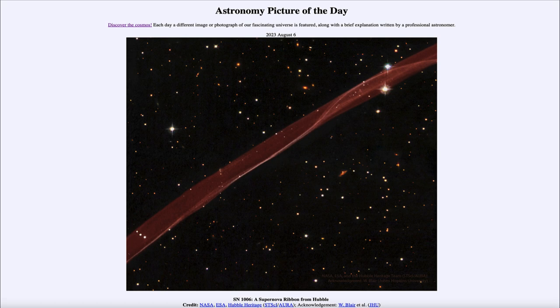Here we're seeing again an example of part of that supernova remnant seen to explode here on Earth over 1,000 years ago. That was our picture of the day for August 6th of 2023, titled SN1006, a supernova ribbon from Hubble. We'll be back again tomorrow for the next picture, previewed to be Pelican stars. Until then, have a great day everyone, and I will see you in class.